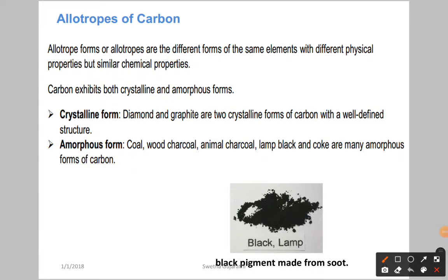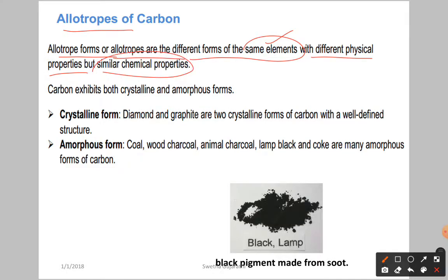Let us discuss allotropes of carbon. What is the meaning of allotropes? Allotropes are the different forms of the same element. They have different physical properties but similar chemical properties. Forms of an element that differ in physical properties but are similar in chemical properties are called allotropes.